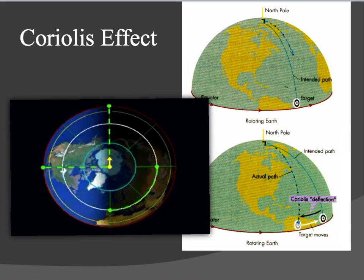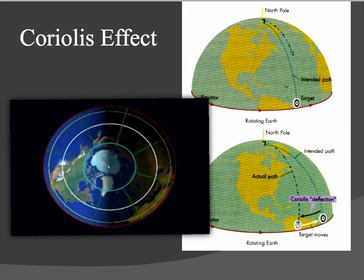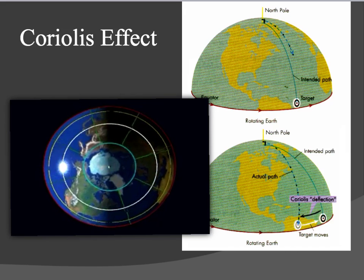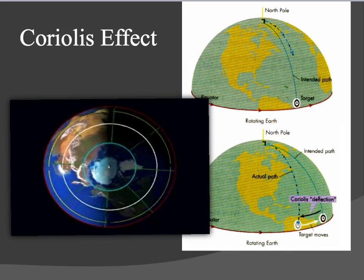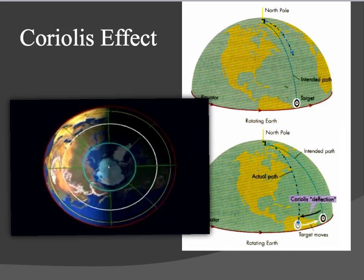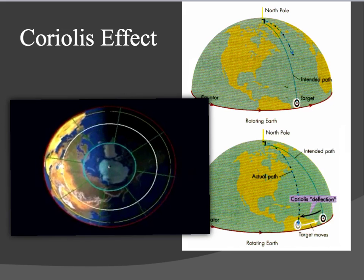Here I have a video that shows you the Coriolis effect as the Earth is moving. Were it not for the Earth's rotation, winds and ocean currents would flow in the direction of initial movement. But because the Earth spins, all free-moving objects, including masses of air, are deflected from their original direction of motion. This is called the Coriolis effect.